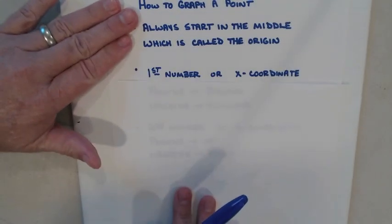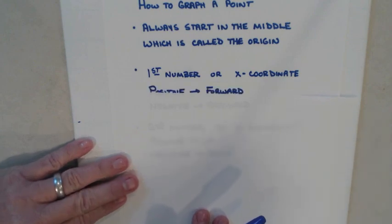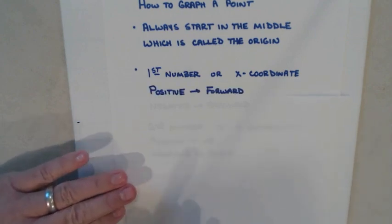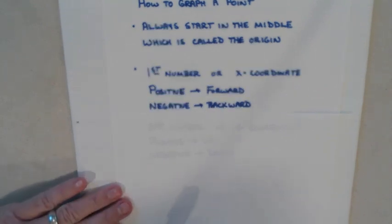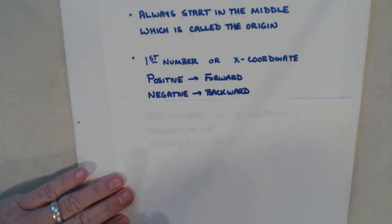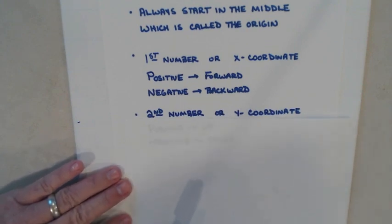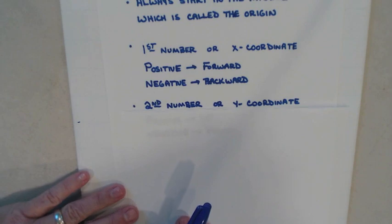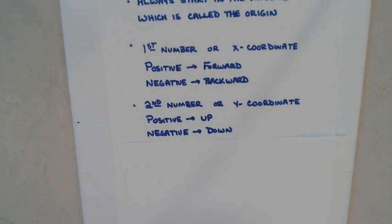The first number is always called the x-coordinate, and you're going to use it first. If that number is positive, you're going to move forward from the origin. If that number is negative, you're going to move backwards from the origin. Then you're going to use the second number, the y-coordinate. If that second number is positive, you go up; if it's negative, you go down. Then plot your point.